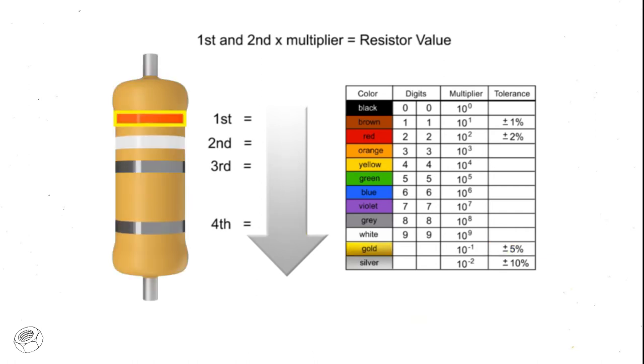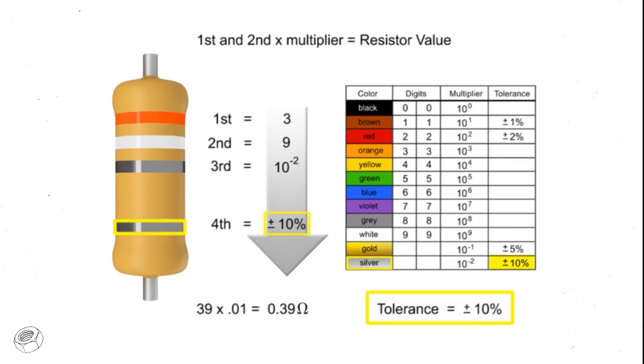In this example, the first band is orange, so the first digit is 3. The second band is white, so digit 2 is 9. The third band is silver, so we multiply the first two numbers by 10 to the negative second power, or 0.01. In this instance, we would take the 39 and move the decimal point two places to the left, resulting in a value of 0.39 ohms. Thus, the value of this resistor is 0.39 ohms with a tolerance of plus or minus 10%.